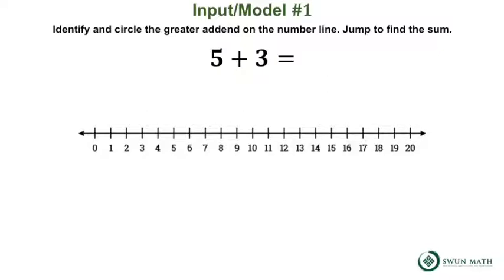Remember, numbers increase when moving to the right on a number line. 5 is the larger addend and we will find 5 and circle it on the number line. The second addend is 3. We will jump that many times to the right to find the sum.